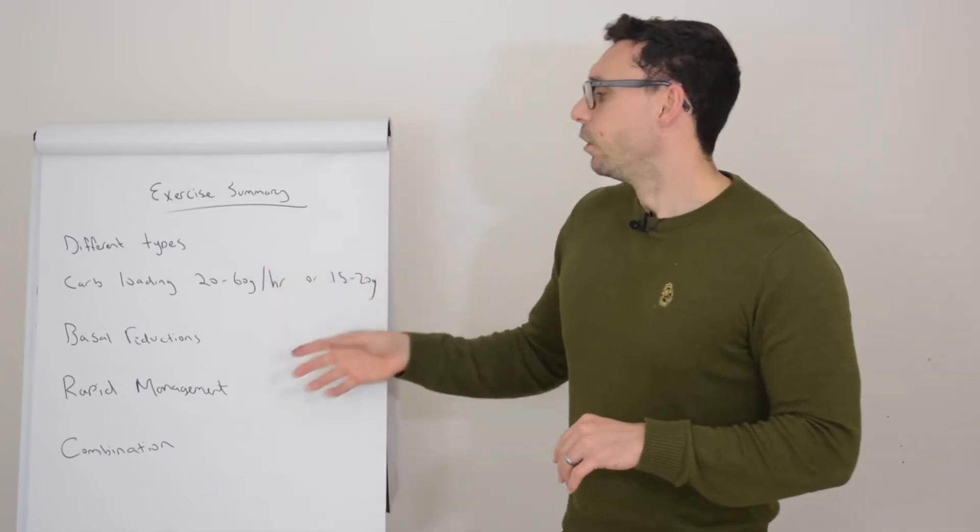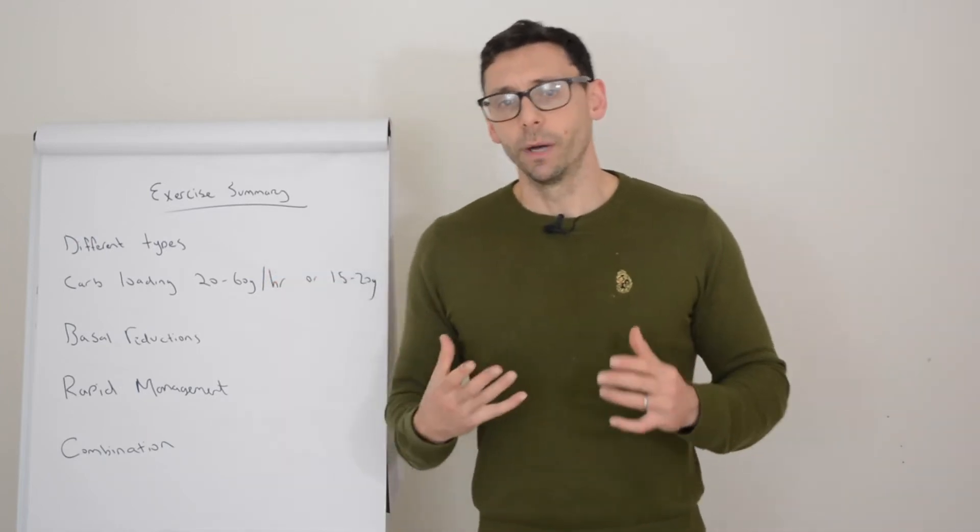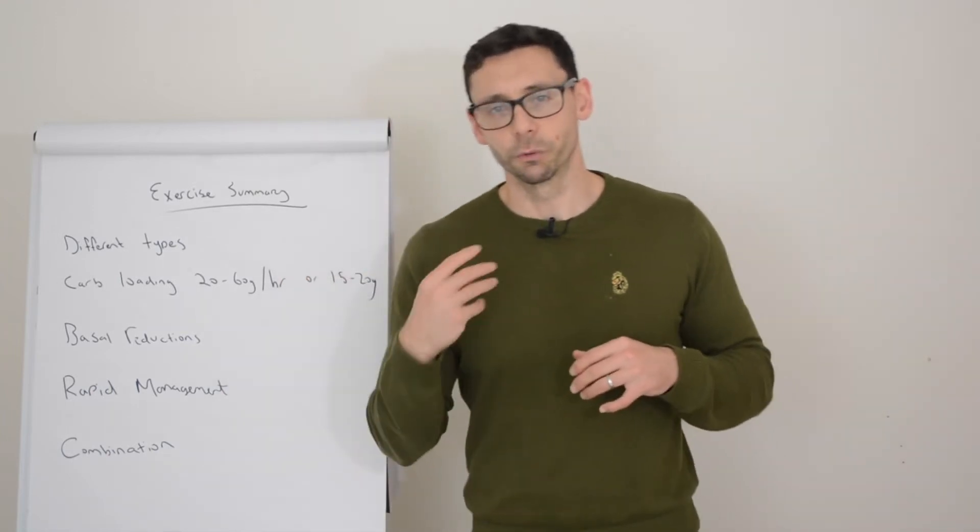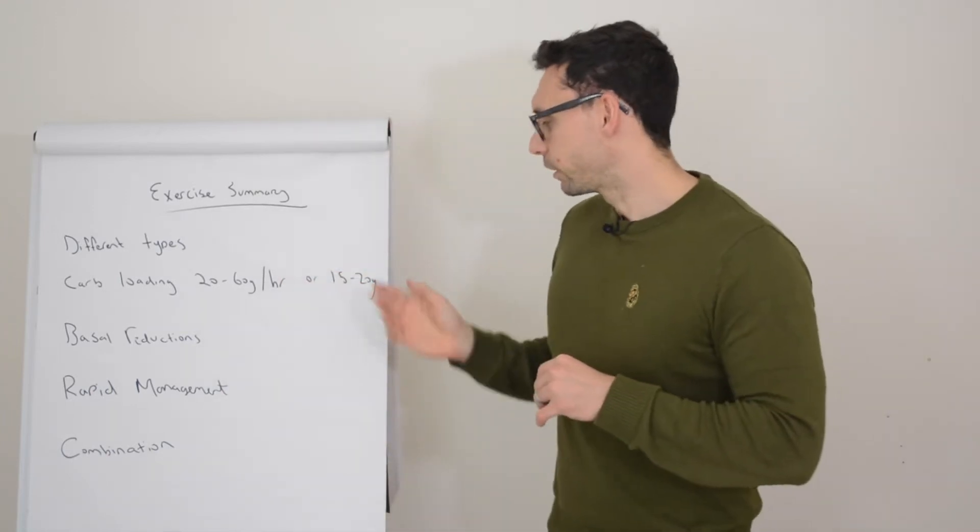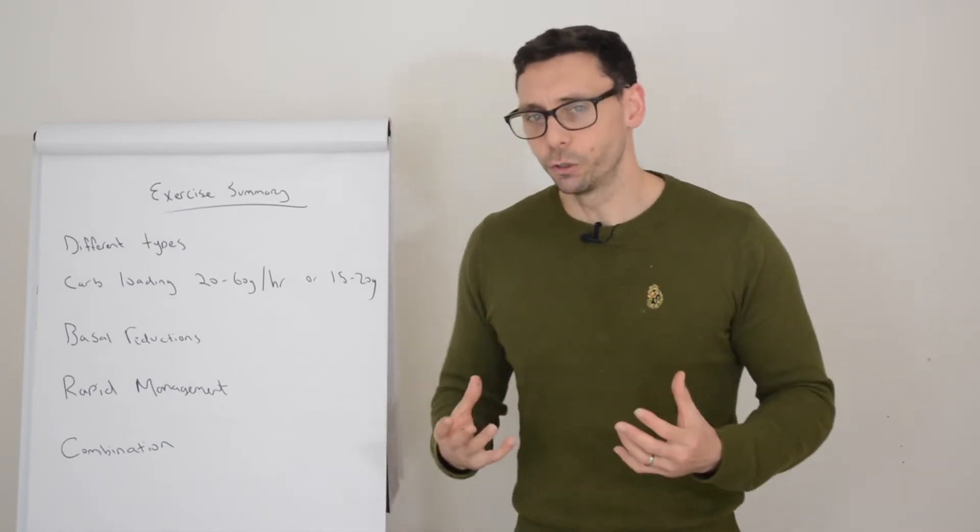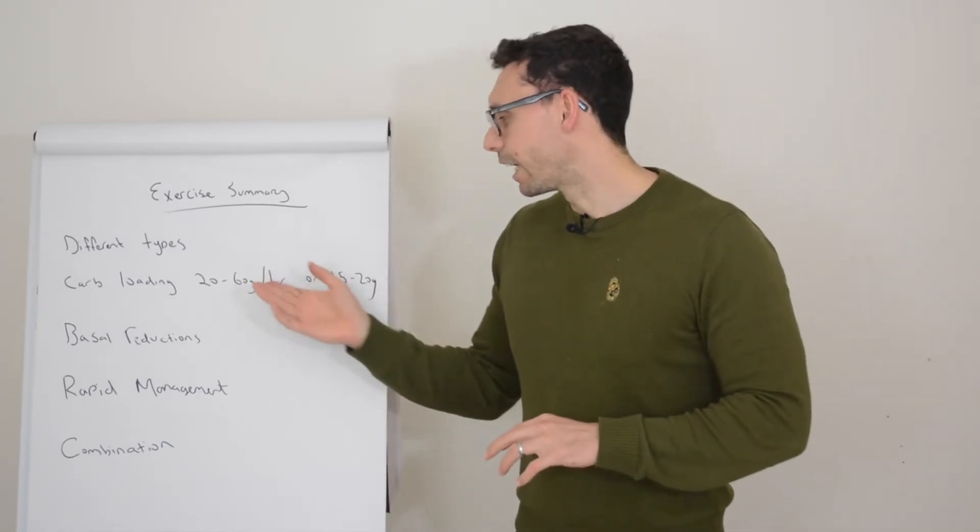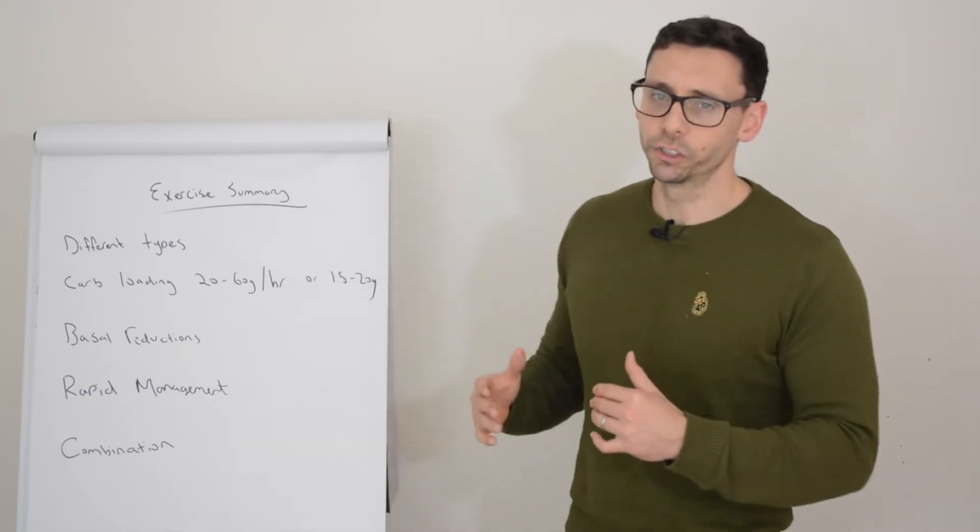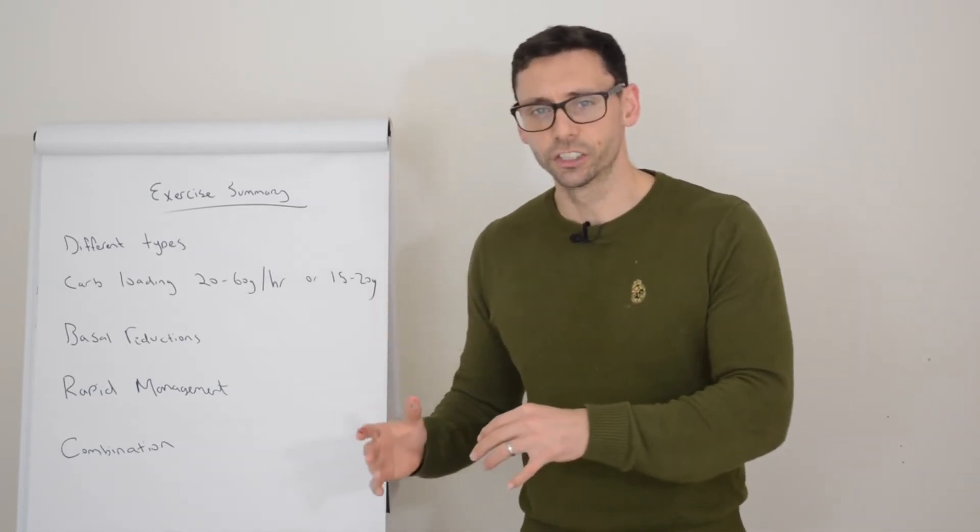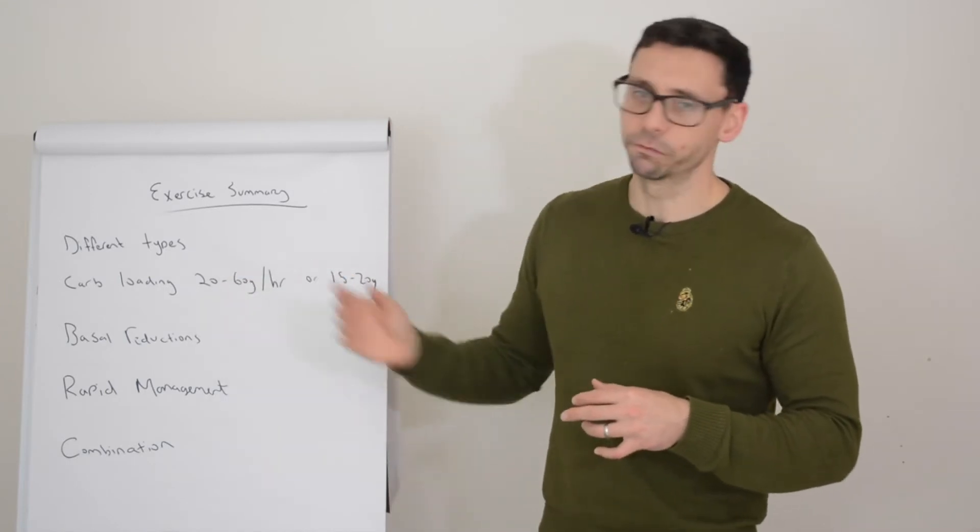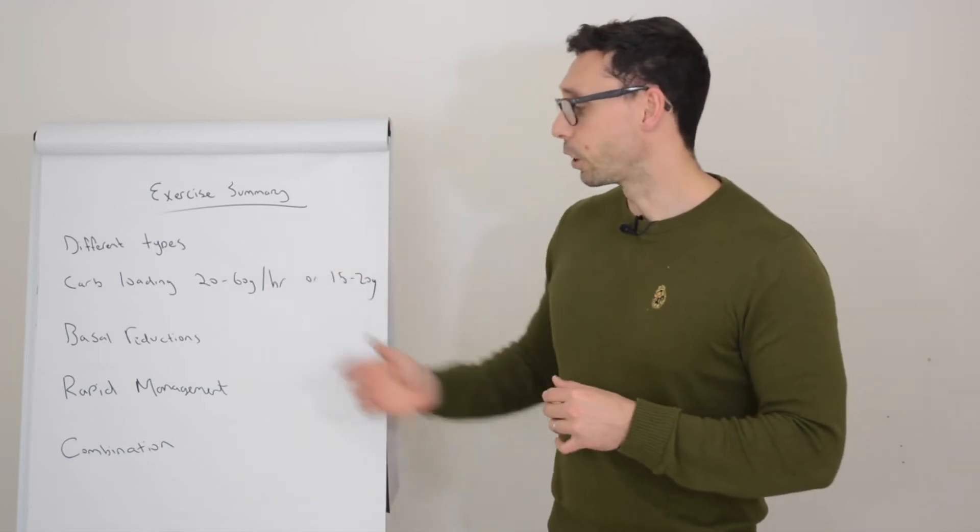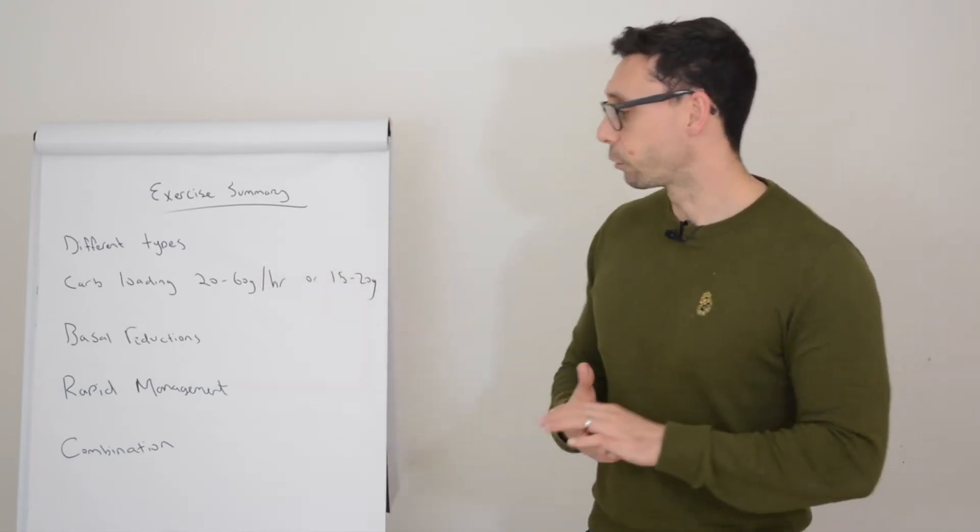That's probably the easiest way, although I appreciate a lot of people exercise to help them lose weight. Every time you eat you're taking on additional calories. 15 to 20 grams of carbohydrate isn't a huge amount, but even 60 grams will come with calories. It could undo some exercise sessions, in which case looking at insulin reductions might be a better method, or you might use a combination of both.